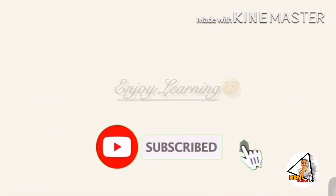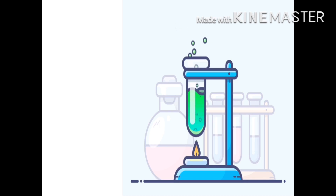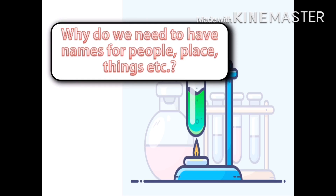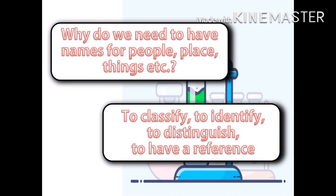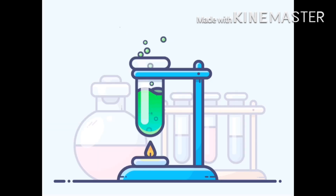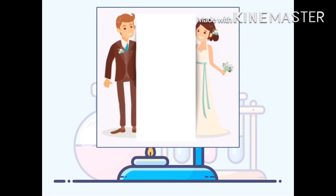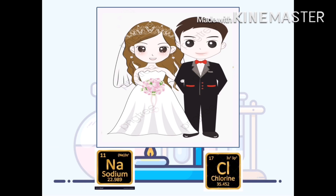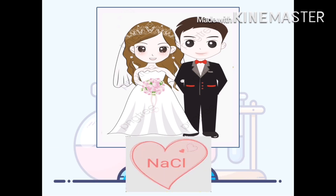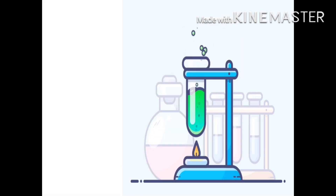So let's get started! Before we jump into our discussion, let us first answer this question: Why do we need to have names for people, places, or things? For us to be able to classify, identify, distinguish, or for us to have a reference. But not all names stay the same. Women, for example, change names once they get married. In a similar manner, elements' names also change when they combine with other elements. And this is what we are going to talk about in this video.